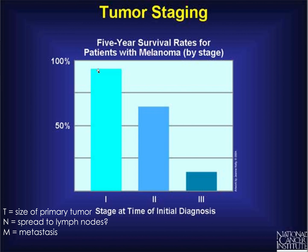Tumor staging works as follows: the lower the stage, the higher the survival rate. TNM staging provides a complete picture — T is for tumor size (the primary tumor), N is for whether it has spread to local lymph nodes and how many, and M is for whether it has metastasized, either yes or no. A full staging description should not just say stage 1, 2, 3, or 4 — it should specify how big the tumor is, whether lymph nodes are involved, and whether it has metastasized. That is the full TNM staging.